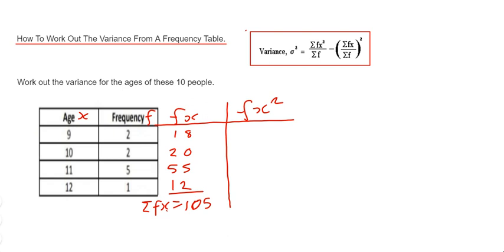Our first one will be 9 squared which is 81, times that by 2 which is 162. Our next one will be 10 squared which is 100, times by a frequency of 2 which is 200.